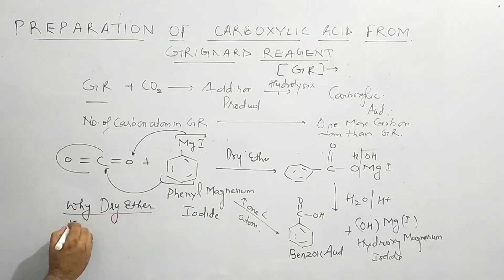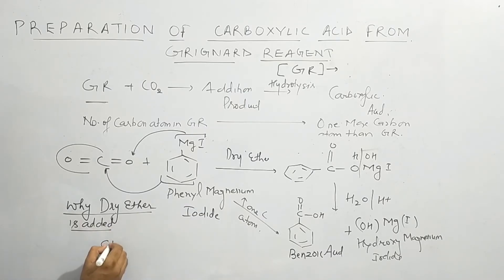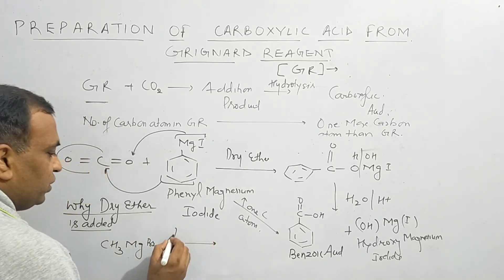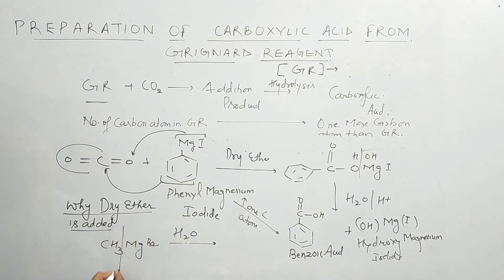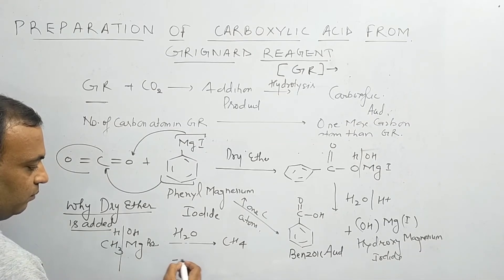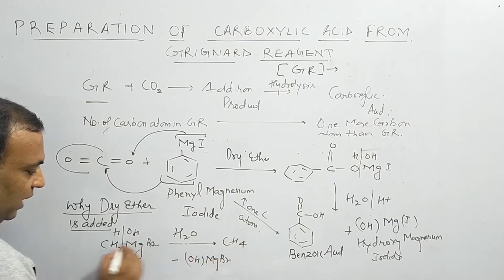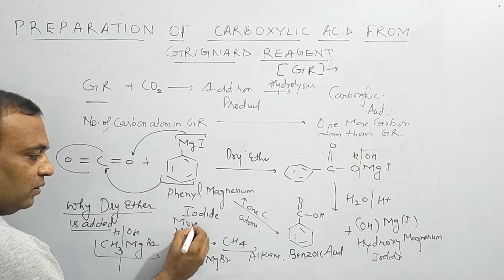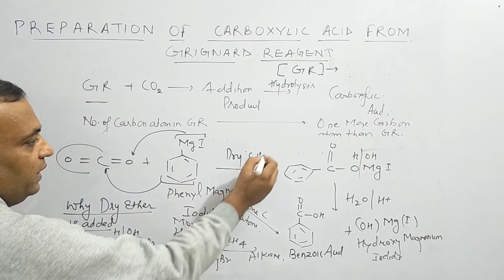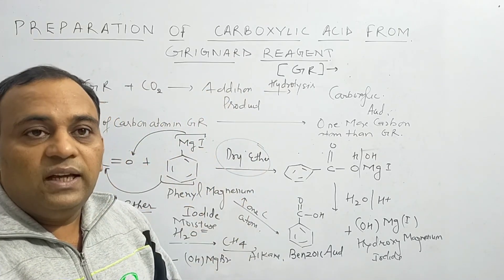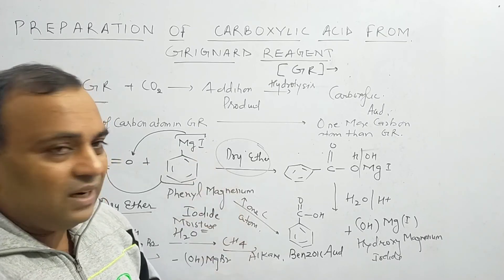Dry ether is added because if you do not use dry ether, the Grignard reagent will react with moisture. For example, if CH₃MgBr reacts with moisture (H₂O), H adds to the alkyl group giving CH₄, and the byproduct is Mg(OH)Br. So the Grignard reagent gets converted into an alkane in the presence of moisture. Dry ether removes this moisture. This is all about the preparation of carboxylic acid from Grignard reagent by reacting with carbon dioxide.